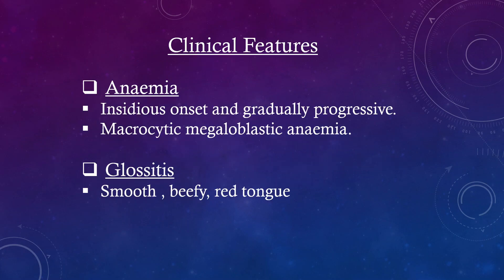Clinical features: Anemia has an insidious onset and is gradually progressive, presenting as macrocytic megaloblastic anemia. Glossitis is also seen, characterized by a smooth, beefy, red tongue.